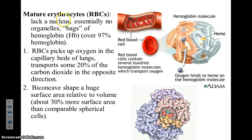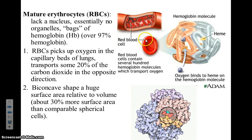Red blood cells are essentially bags of the protein hemoglobin. Over 97% of a red blood cell is hemoglobin. This is an iron-containing protein, and it's the iron groups, or heme groups, that bind to oxygen. Iron is what gives our blood its red color. Red blood cells also have a distinct biconcave shape, which increases their surface area and allows them to more rapidly exchange gases.